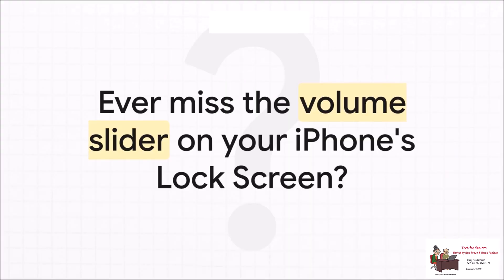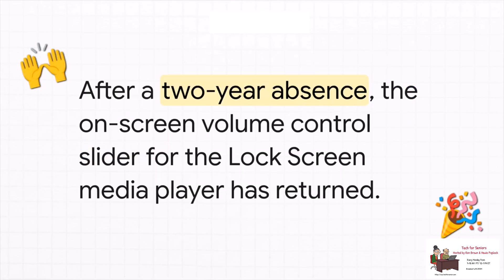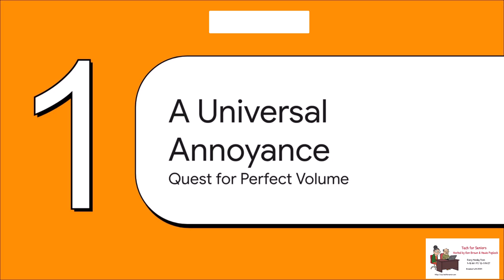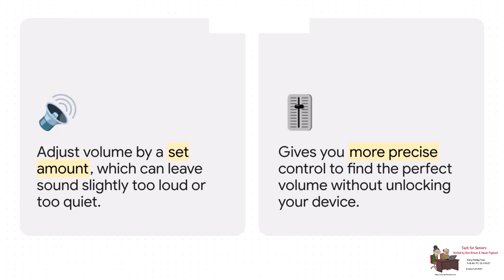You know that feeling — you're listening to some music and trying to get the volume perfect, but you can't without unlocking your phone. If you felt that frustration, you're definitely not alone. For a couple of years, a really key tool for that exact job just disappeared. But the good news is, after two years of being gone, that handy little slider is finally back. Your physical volume buttons are great for big changes, but they work in fixed steps — one click is a little too quiet, the next one is just a bit too loud. The slider gives you that smooth, fine-tuned control to land on that perfect audio sweet spot.